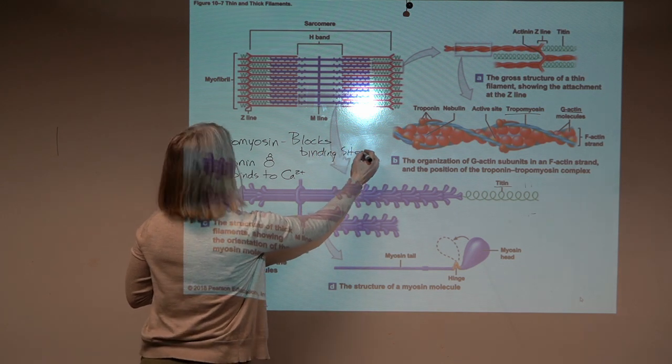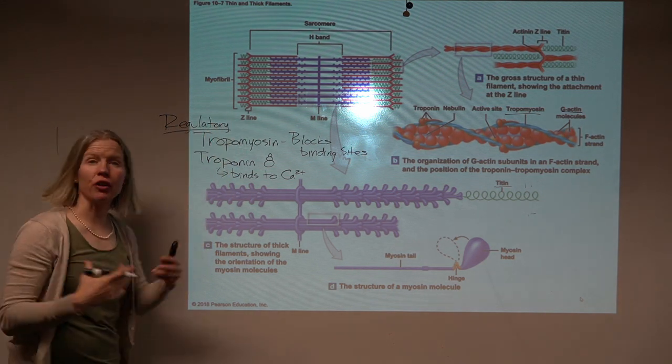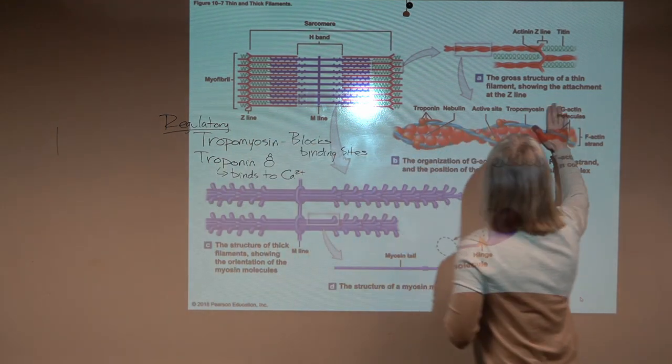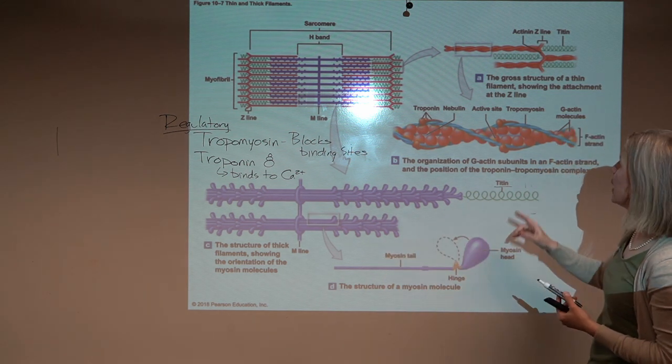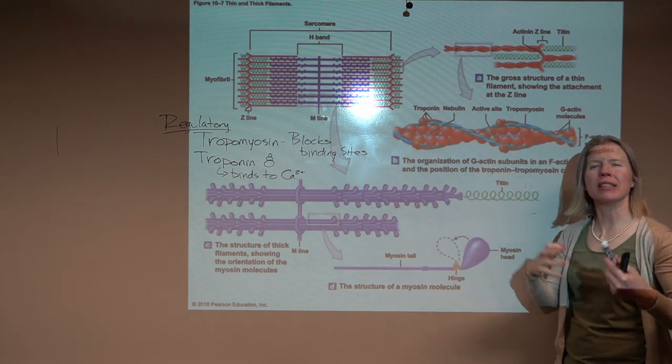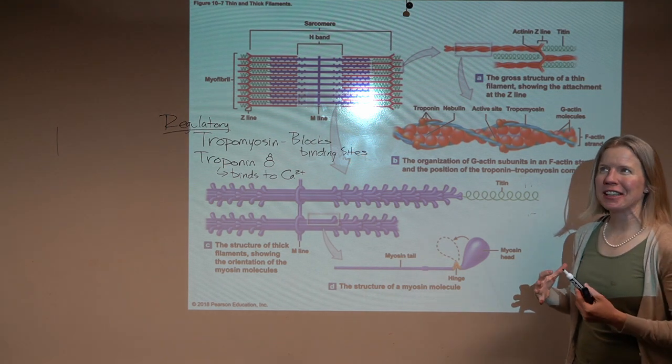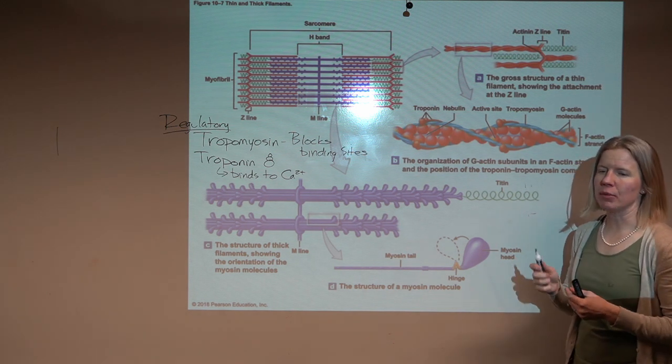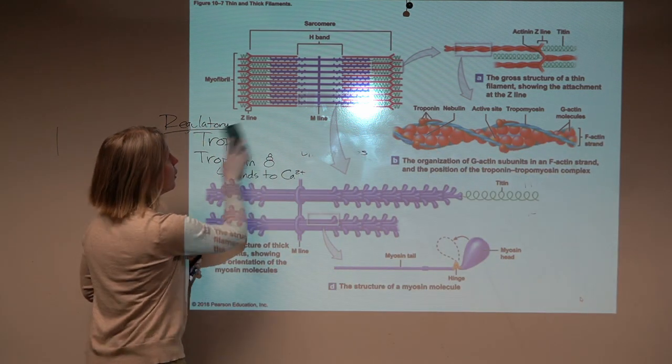So these are considered regulatory proteins, because they're going to tell us when we can contract and when we can't, while things like actin and myosin are going to do the actual contraction. And then things like titin, our Z line, our M line are all proteins that are just trying to kind of keep everyone adjacent in the correct forms or the correct orientations. And so those are considered stabilizing proteins. Okay, so that's kind of what's making up our sarcomere.